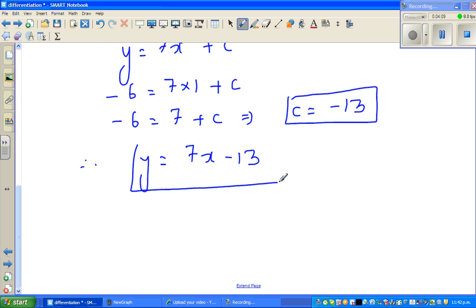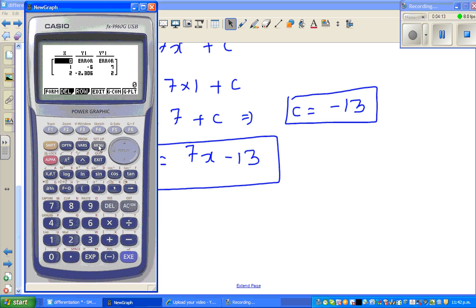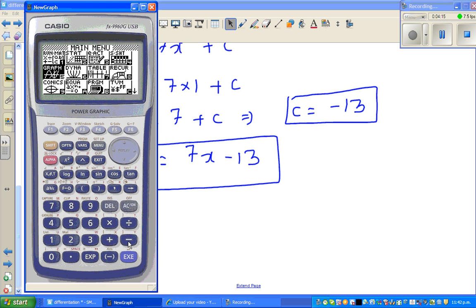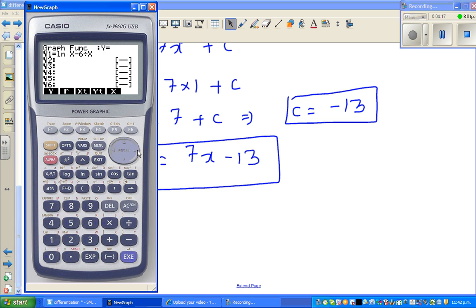Now just to confirm and to understand graphically, let us go to graph menu. Go to graph. And you've got this function. And let us type in the equation of the tangent, which is 7x minus 13. And we'll see how the graph looks like.